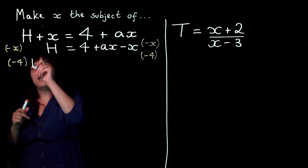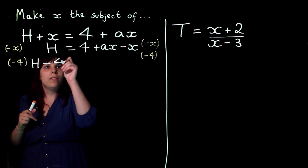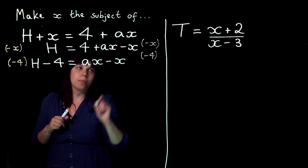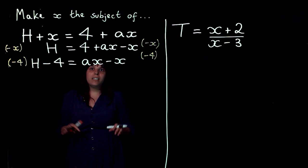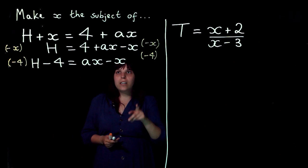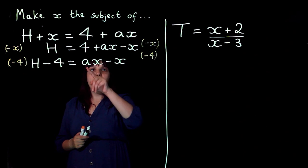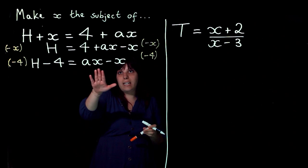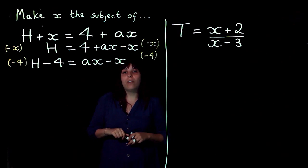So that's going to be h minus 4 on that side equals ax minus x on that side. Now the next thing I need to do is look at this side because I've got an ax minus x. And I can immediately see, as I've got an x in both of them, that I can factorize.